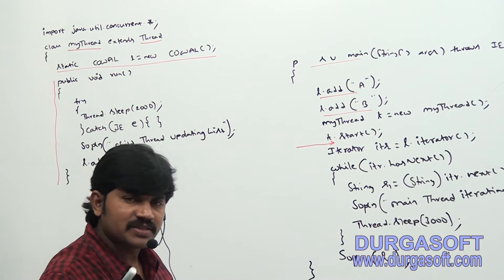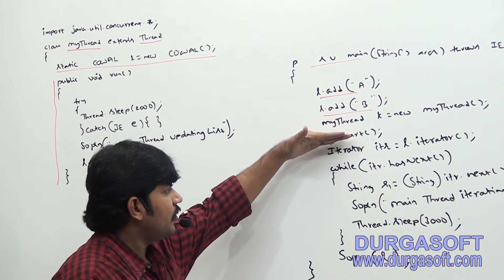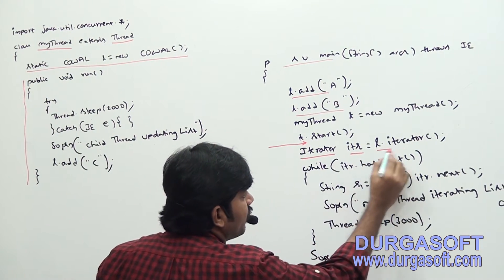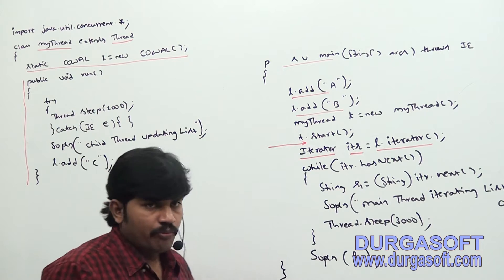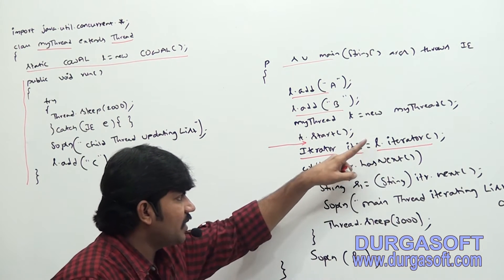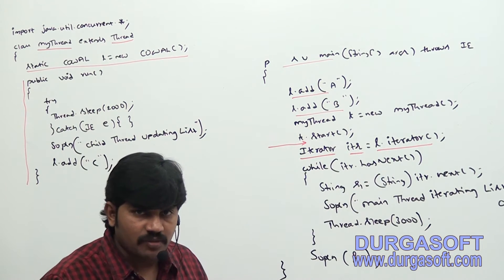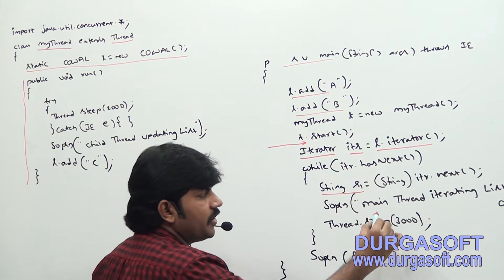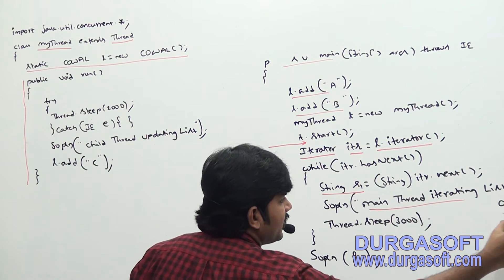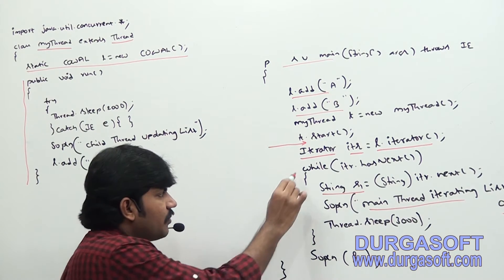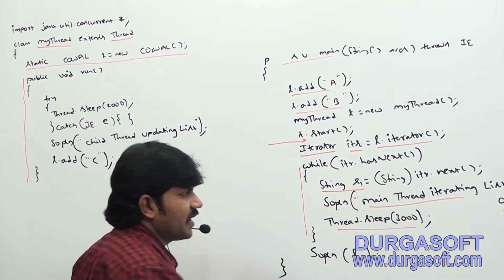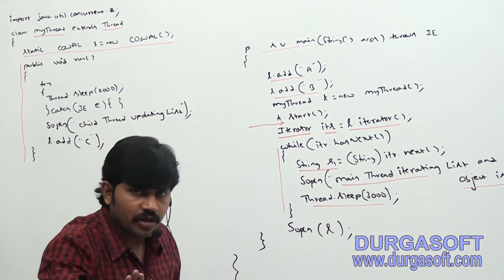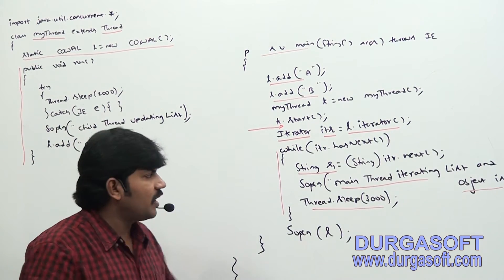In multi-threading, I've covered several examples. Now, the main thread is iterating: Iterator iterator = L.iterator(). The main thread opens the iterator for the CopyOnWriteArrayList object. The main thread prints the current object and sleeps for three seconds. This loop will be repeated for every object present in the CopyOnWriteArrayList.